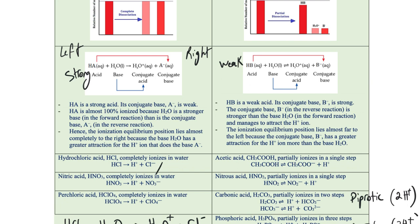If we look at the ionization equilibrium position in the case of the weak acid, it lies almost far to the left because the conjugate base B- has a greater attraction for H+. So it's going to always react with H+ to reform HB. Because this is a reversible reaction — as you can see with the double-headed arrow — once B- forms, it reacts with H+ from the hydronium ion to reform the weak acid HB.